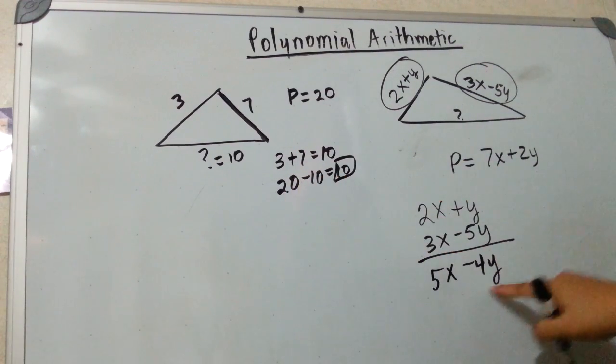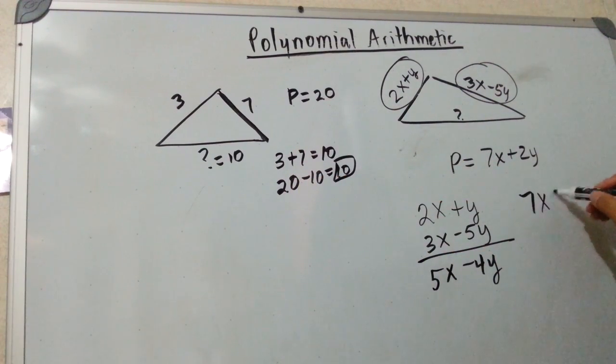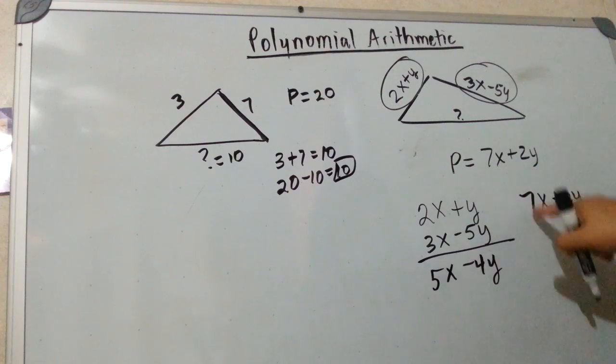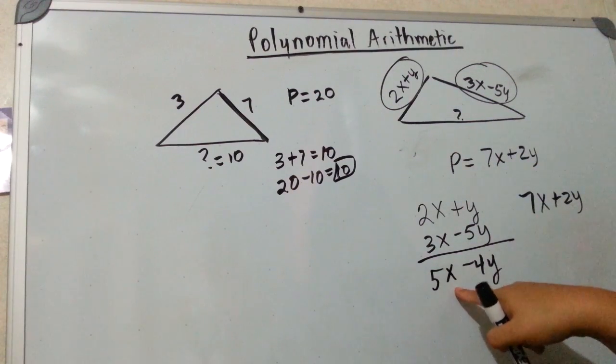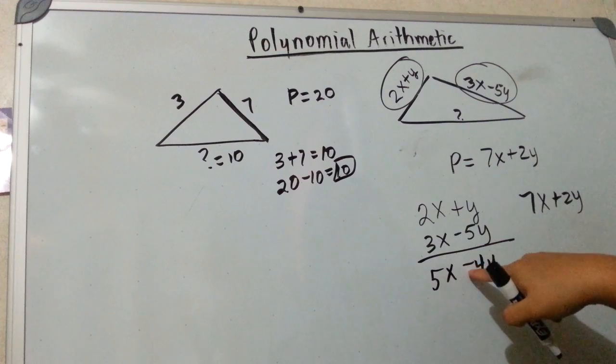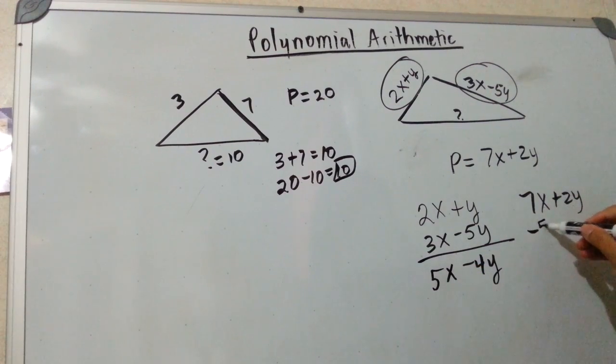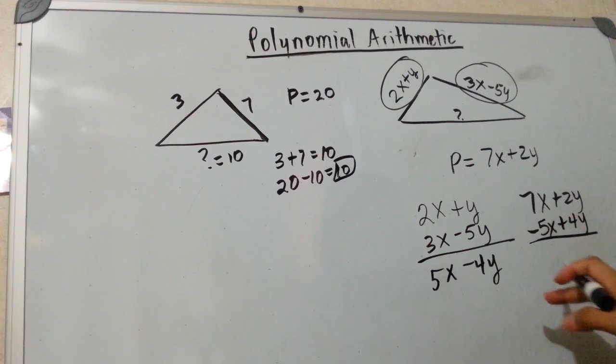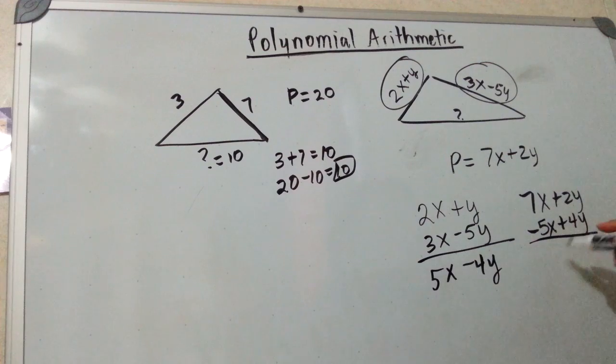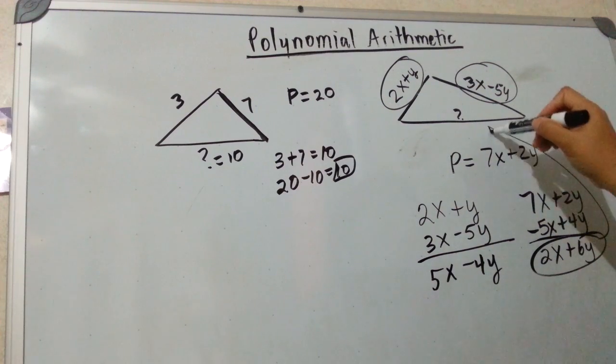So we're going to do the same thing. You know that these two sides are these polynomials, and you know that the perimeter is this. How do we find the missing side? Well, you take this one and this one, and you add them. So you say 2x plus y and 3x minus 5y. That gives 5x minus 4y. And that would be the equivalent of us adding the two sides. So now we're going to subtract from the perimeter. So we have 7x plus 2y, that's the perimeter, minus this one. Remember, when we subtract, you've got to change the signs on both of them. So this is minus 5x plus 4y. When you subtract, you have to change the signs. That's the equivalent of distributing that negative sign. So now you combine them. So 7 minus 5 is 2x plus 6y. So that would be your missing side.